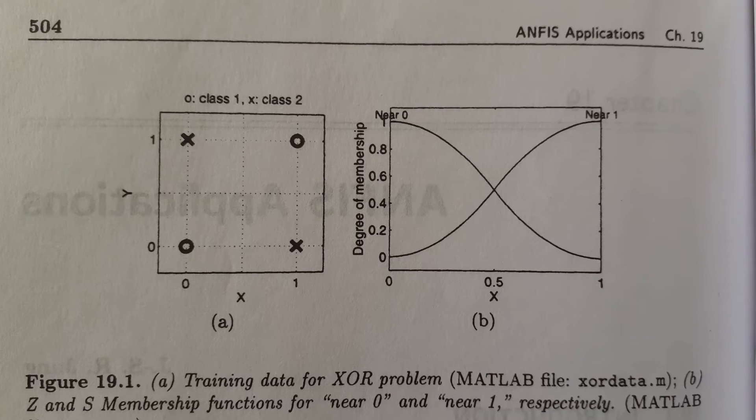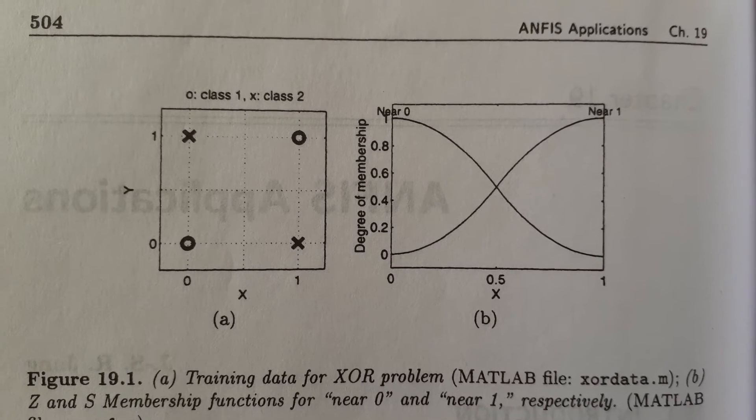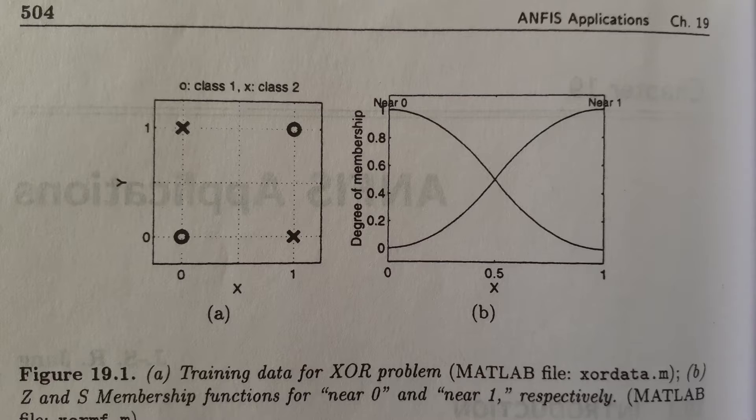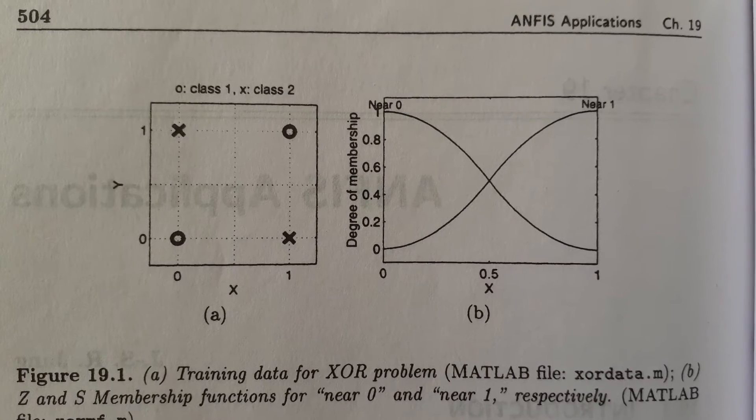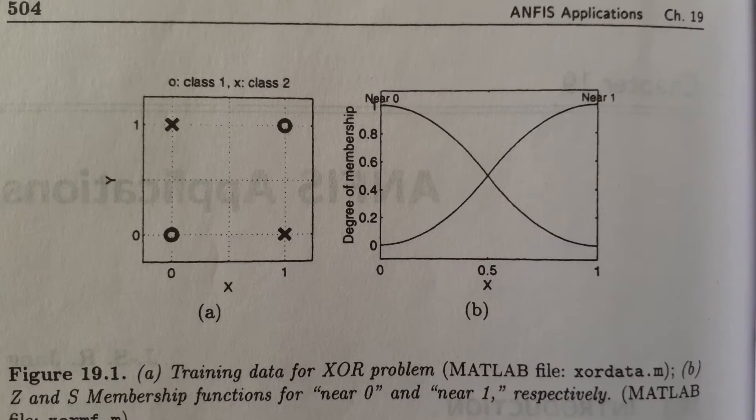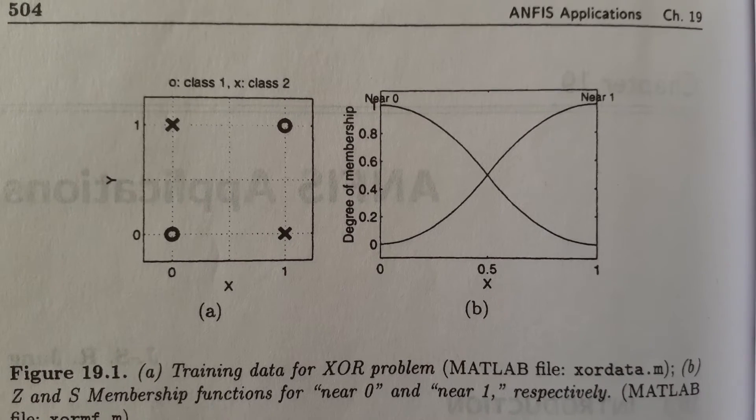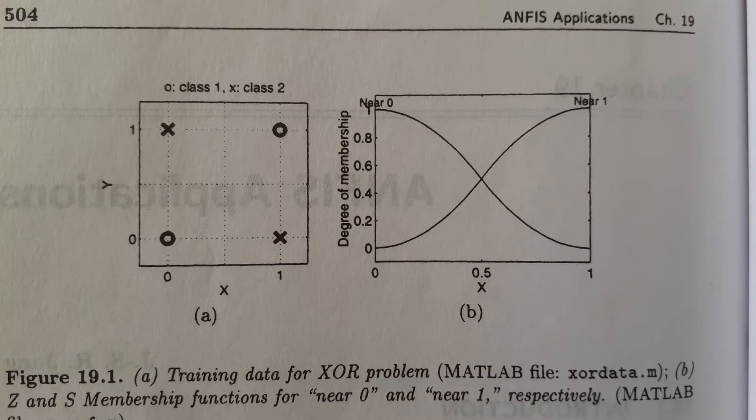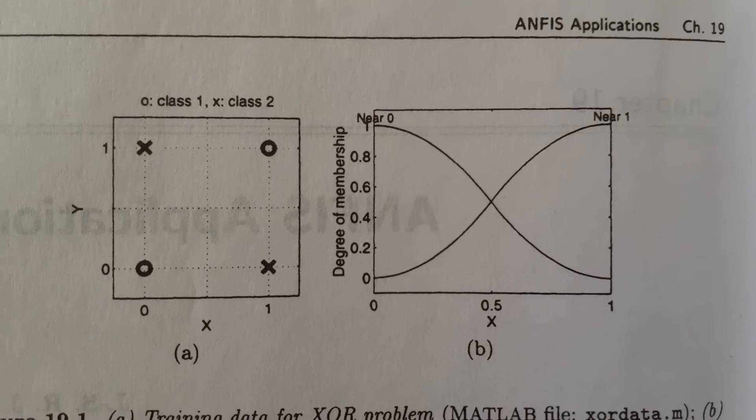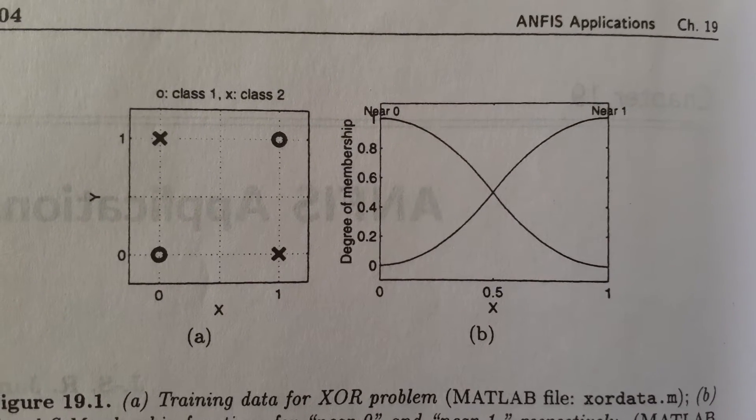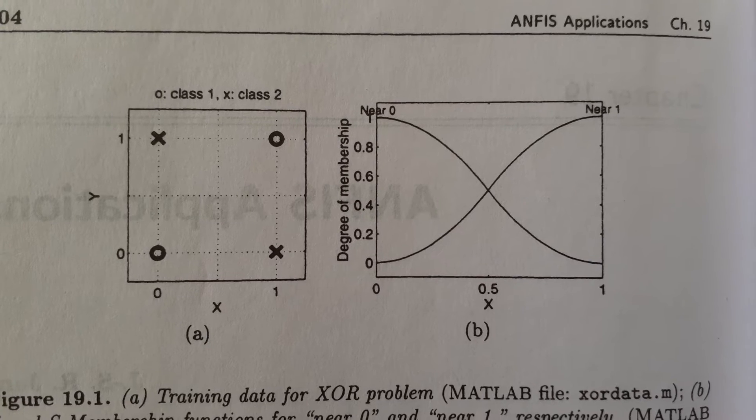First, find the prototype nearest to the new data point and assign the point to that prototype class. To do this, we need a similarity measure that quantifies the meaning of near. This is done in terms of membership functions.